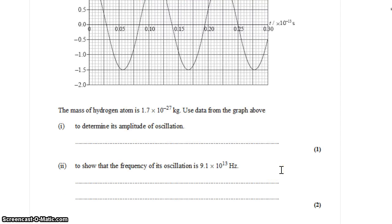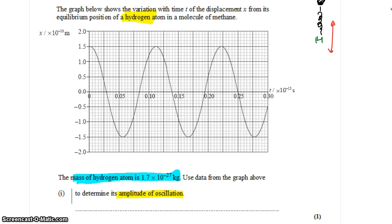We want to use this information in the graph to determine the amplitude of the oscillation. To help us, we're given the mass of the hydrogen atom, which is going to show up later. First off, for the amplitude though, that's relatively straightforward. That's just the distance from the peak to the equilibrium position. And we can read that right off the graph.